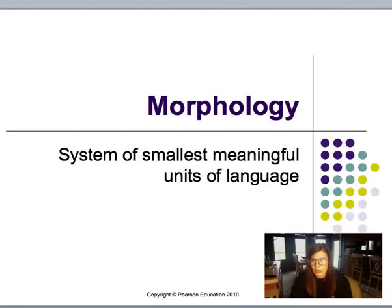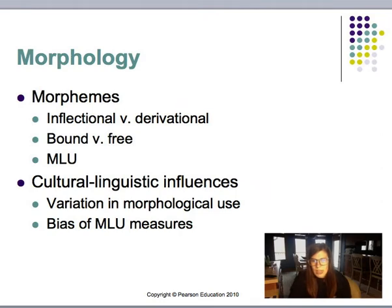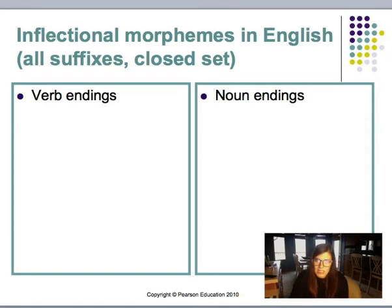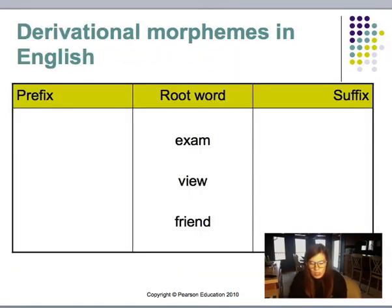Morphology is the system of smallest meaningful units of language. It consists of morphemes, and there are also cultural and linguistic influences. For inflectional morphemes in English, we look at verb endings: the present progressive ending in -ing, the third person singular, past tense ending in -ed, and participial ending in -ed or -en. For noun endings, we have possessive and plural.